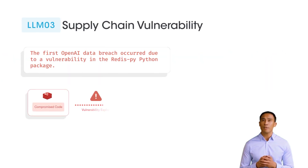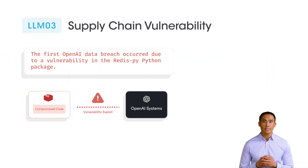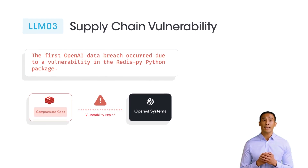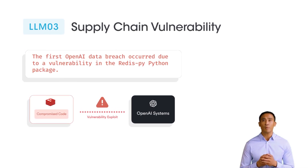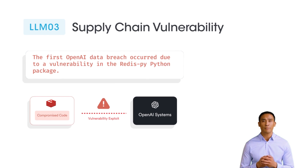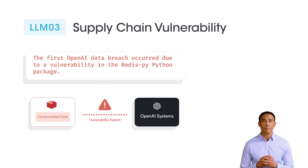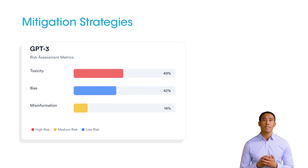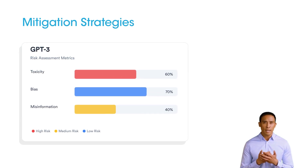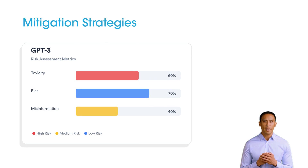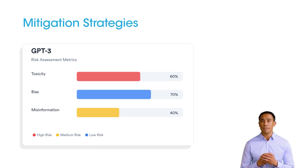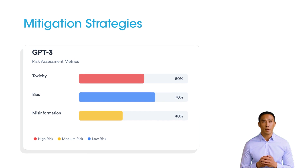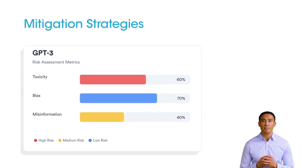Supply chain vulnerability occurs when risk is introduced via compromised models, datasets, or third-party integrations in the AI development pipeline. Example: the first OpenAI data breach occurred due to a vulnerability in the Redis-py Python package. Conduct model and agent discovery to identify sanctioned and shadow AI. Use model cards to evaluate risks like bias, toxicity, and misconfigurations in third-party components. Conduct third-party risk assessments for all supplier components to detect vulnerabilities.